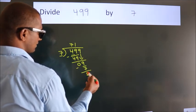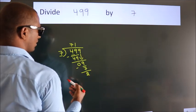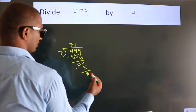After this, no more numbers to bring down. So what we do is we put dot, take 0.